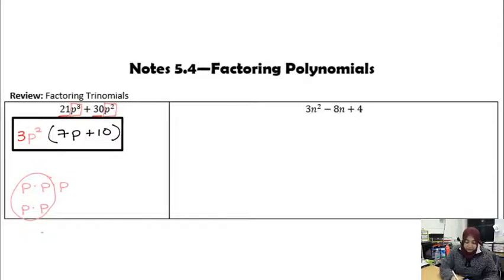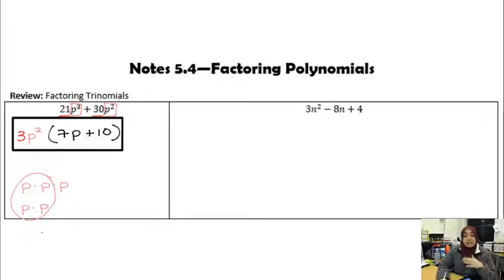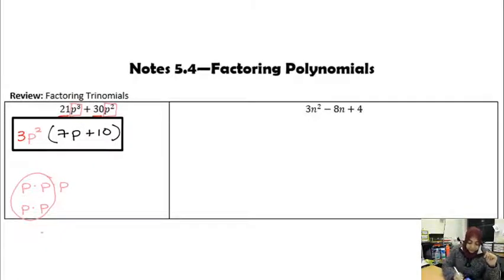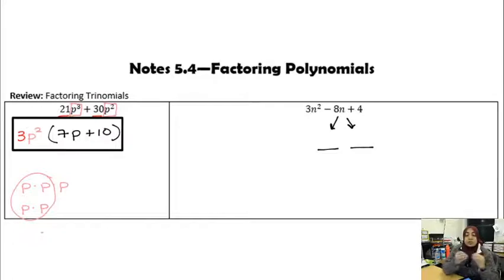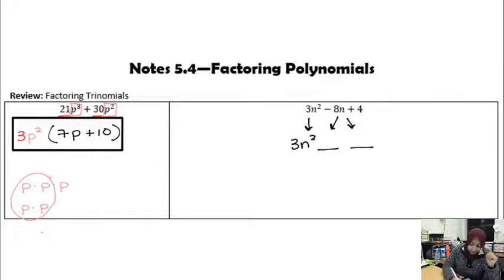Now let's look at the trinomial. The first thing I want to do is check: is there a greatest common factor? If there is, I need to factor that out first before I do anything else. 3, negative 8, and 4 do not have any common factors. So I'm going to have to factor by grouping. I'll first split up this middle term and figure out what two values combine to give me negative 8n. Remember, there's a special way to do that.